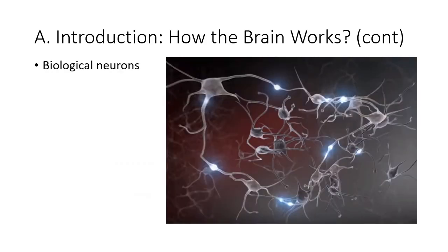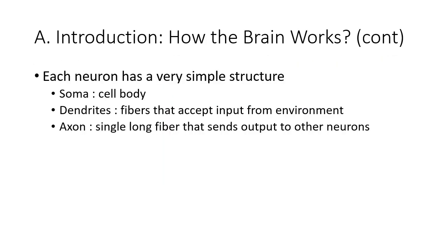This is an artist's impression of biological neurons. A biological neuron has a very simple structure. First, the soma, which is the cell body. Then dendrites, which are fibers that accept input from the environment. And the axon is a single long fiber that sends output to other neurons.